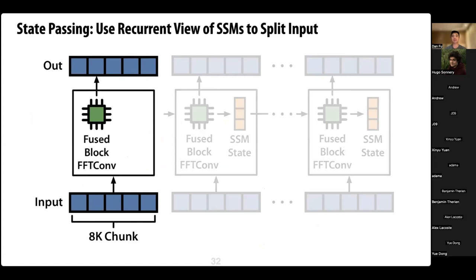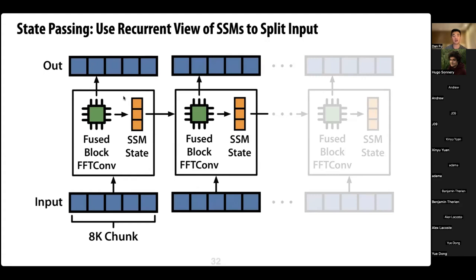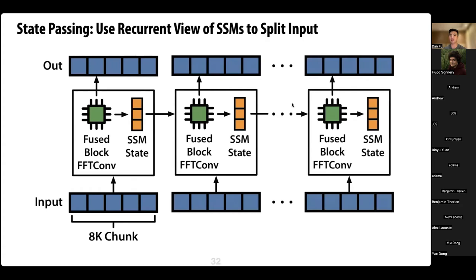That's where the state passing algorithm comes in. We use the recurrent view of SSMs to split the input into chunks of 4k or 8k, pass each chunk into the fused FFT convolution algorithm, and also produce an SSM state vector. For each subsequent chunk, we pass in the input together with the state from the previous chunk, using the SSM update operation so the output correctly depends on both state and input — as if we had computed the whole thing in sequence. Each chunk is loaded onto SRAM, uses tensor cores, but we can scale to arbitrary sequence lengths.